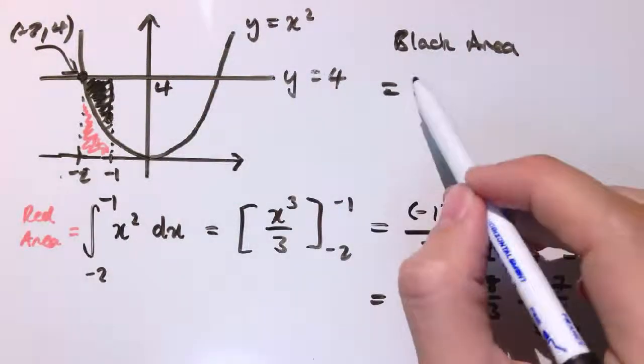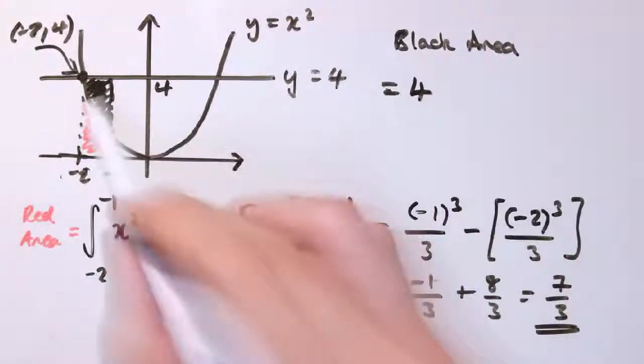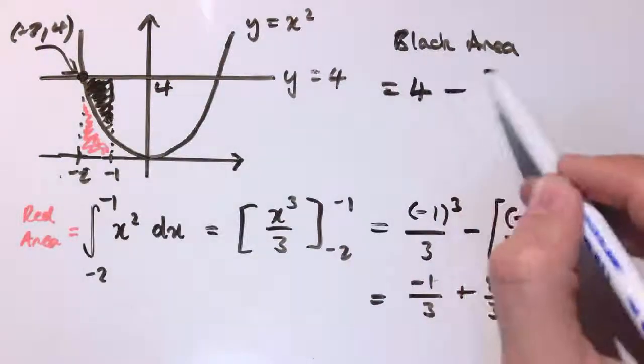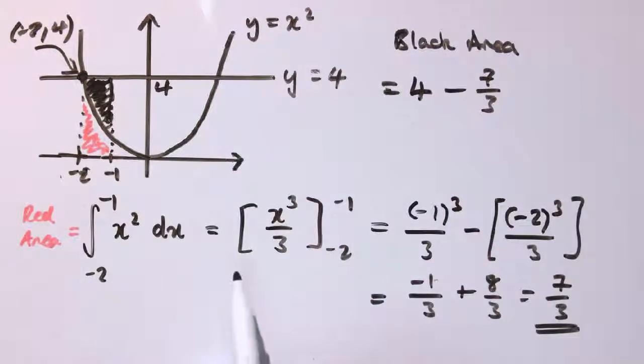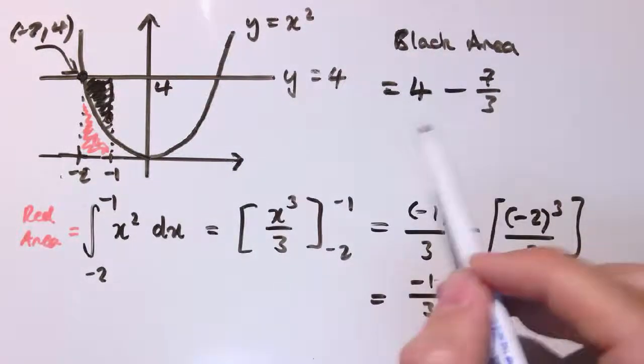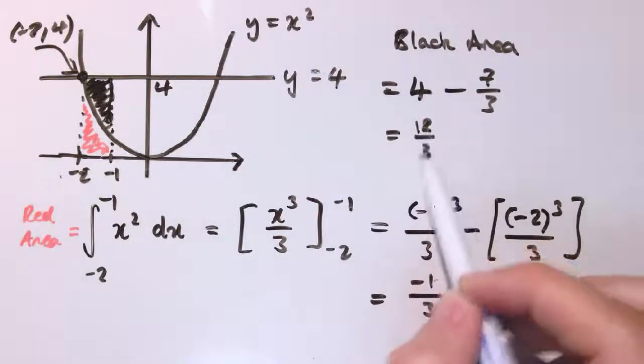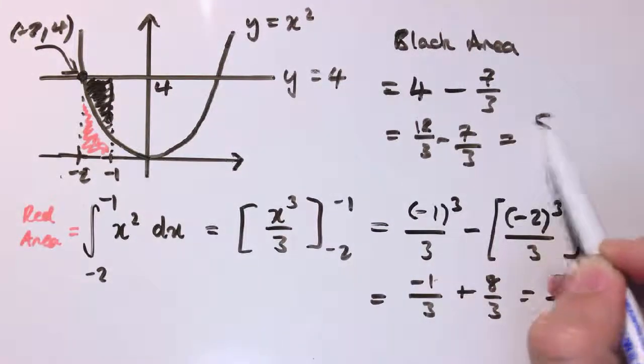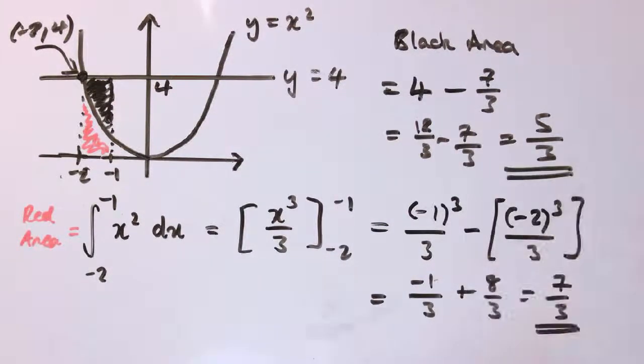So the black area is just going to be 4, the area of the rectangle, minus the red area, which is 7 thirds. And 4 is 12 thirds. So this is 12 thirds minus 7 thirds. So our final answer here is 5 thirds units squared.